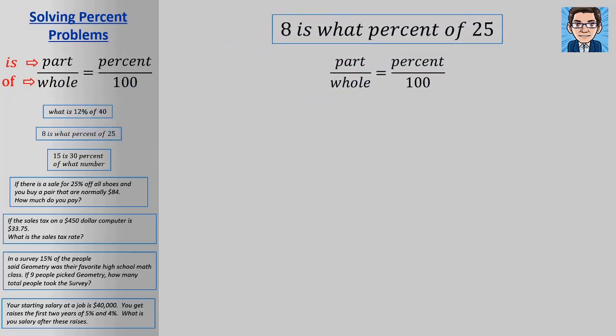All right. Eight is what percent of 25? So in this one, we have the is or the part. We know what the part is. The part is going to be 8. We also know the whole. The of is 25. What we don't know is the percent. So that's where the variable is going to be. Cross multiply, 25x equals 800. So x equals 32 when we divide both sides by 25.